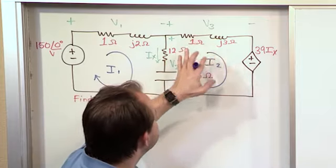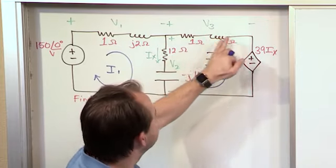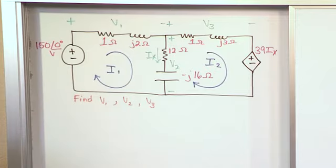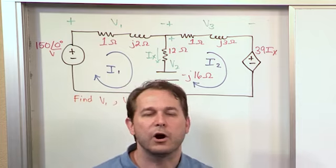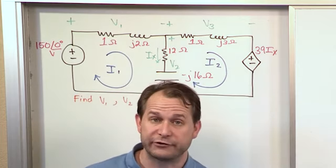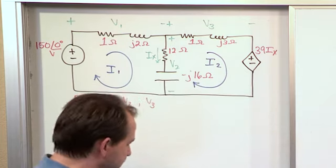And this guy will be the current circulating through there times this impedance over here. And then we'll get to a similar argument about finding V sub 2 over here. So V1, 2, and 3 are all going to come about once we know the mesh currents. That's the bottom line. So let's find those mesh currents.